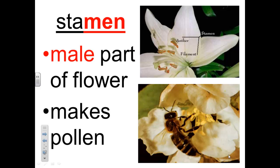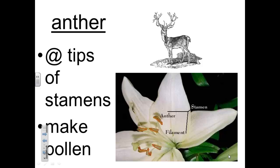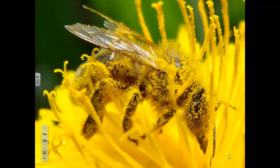The stamen is the male part of a flower. Pollen, a grainy often yellow powder, is made in a tissue at the top of each stamen. A single flower may have many stamens. The anther is at the tips of stamens and they are the parts that make the pollen. Here is a picture of pollen stuck to a bee.